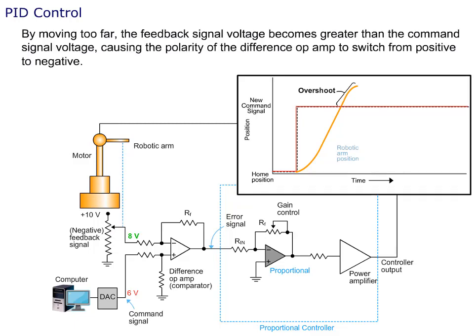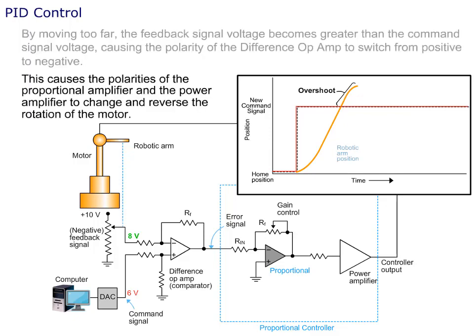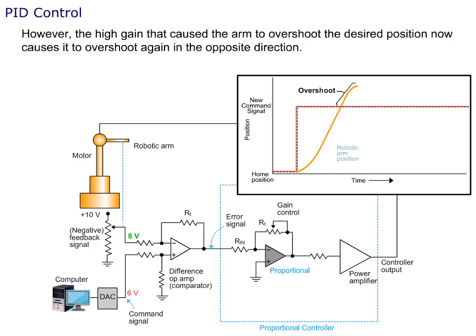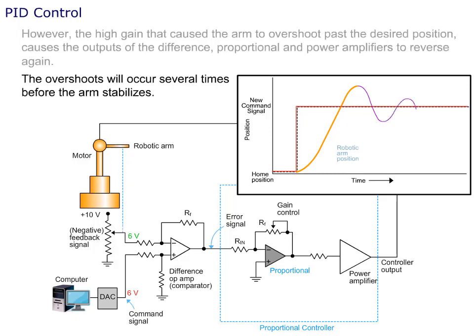By moving too far, the feedback signal voltage becomes greater than the command signal voltage, causing the polarity of the difference op amp to switch from positive to negative. This causes the polarities of the proportional amplifier and the power amplifier to change and reverse the rotation of the motor. However, the high gain that caused the arm to overshoot the desired position now causes it to overshoot again in the opposite direction. The overshoots will occur several times before the arm stabilizes.